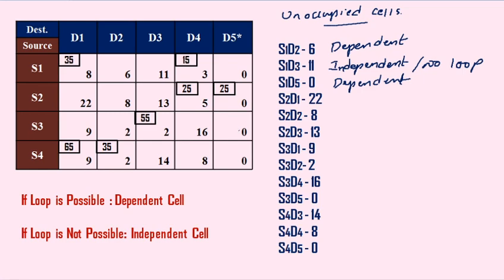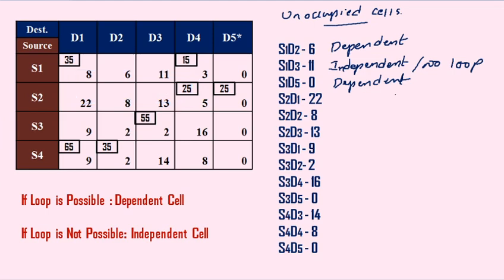Next one: S2, D1. We have three possibilities here. Going upward direction, then right direction — that forms a complete loop. So S2, D1 is having a loop — it is a dependent cell.